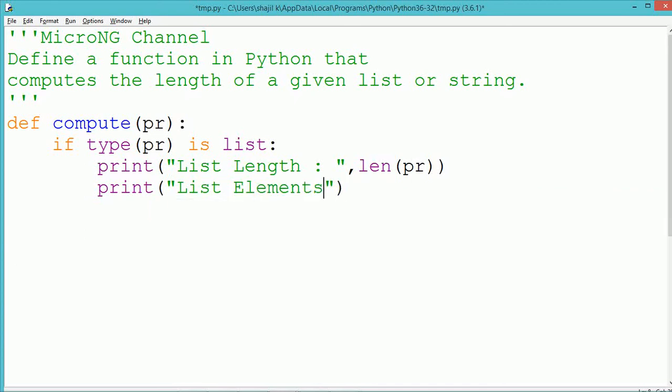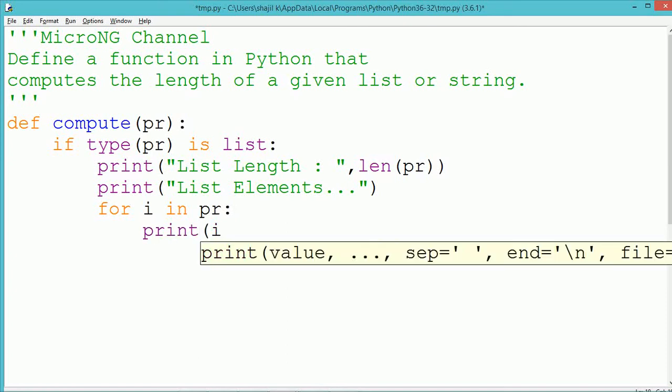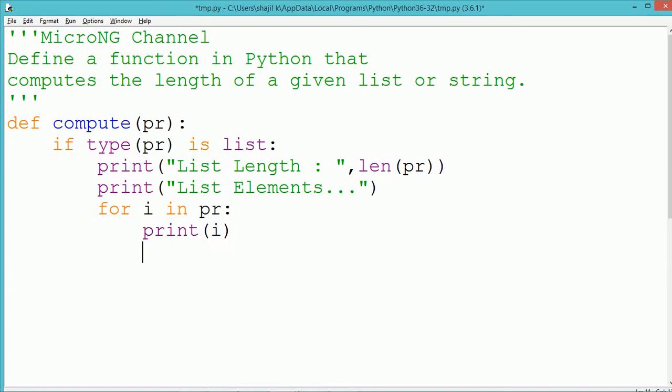We check whether pr is a list. If the parameter is a list, we find its length by using the len method and display all the elements present in the list by using a for variable.